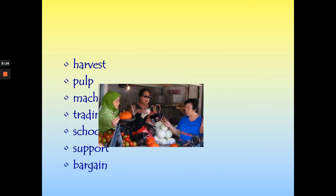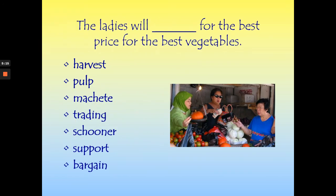Here are our words again. Let's look at our sentence: 'The ladies will blank for the best price for the best vegetable.' They will bargain — they're going to talk back and forth until they can come up with the best price.